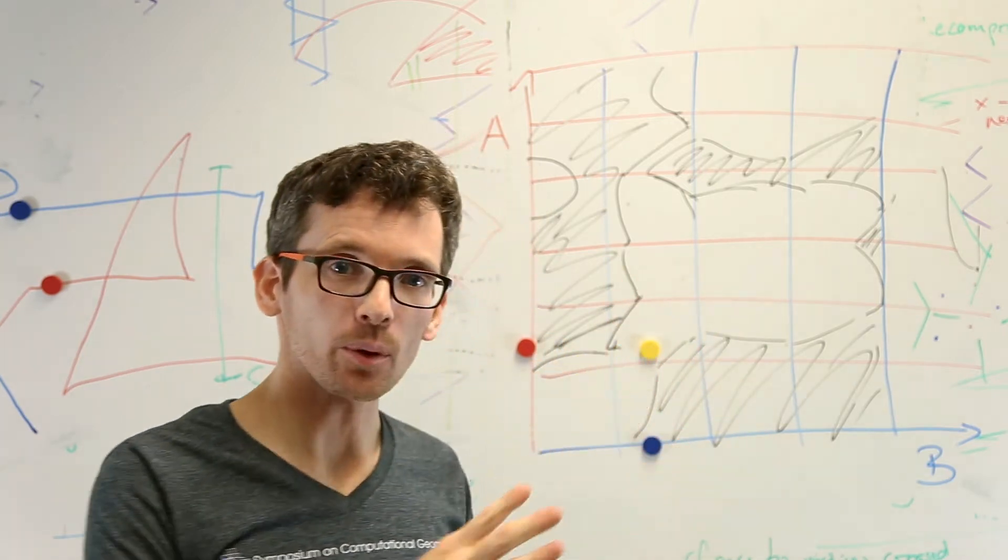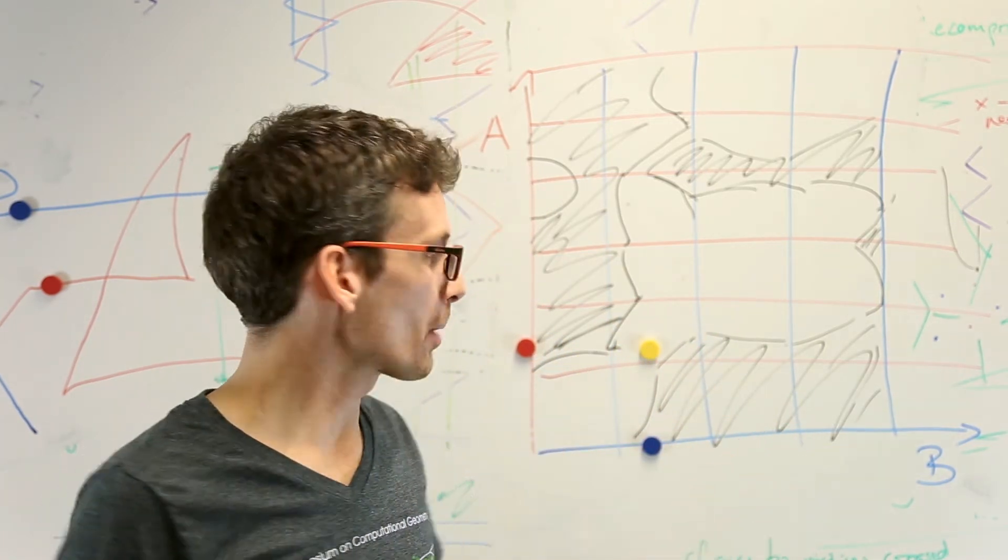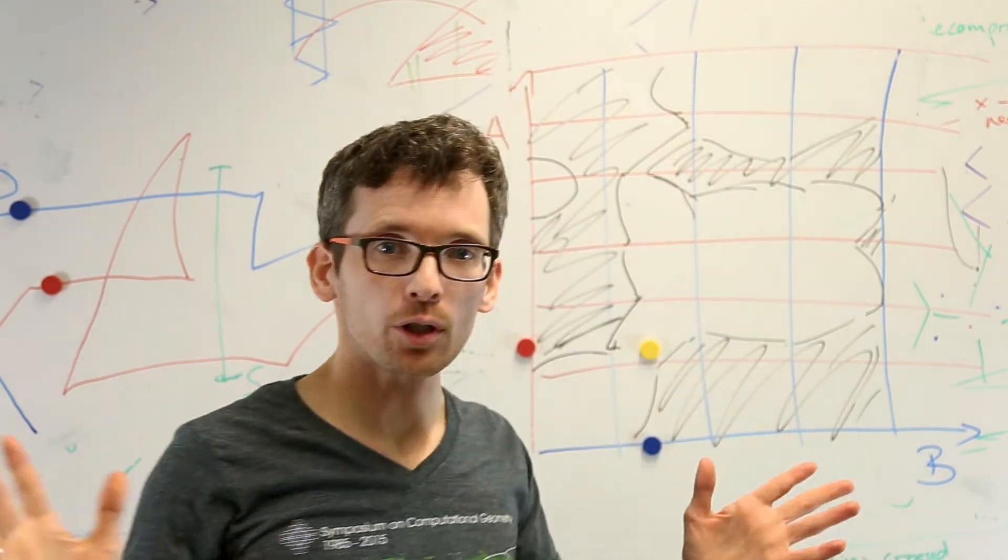Once we have the free space diagram, we can test whether the Fréchet distance is smaller or larger than delta by searching for a monotone path within the free space.